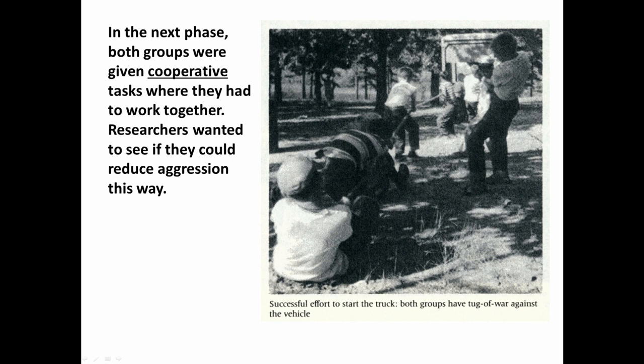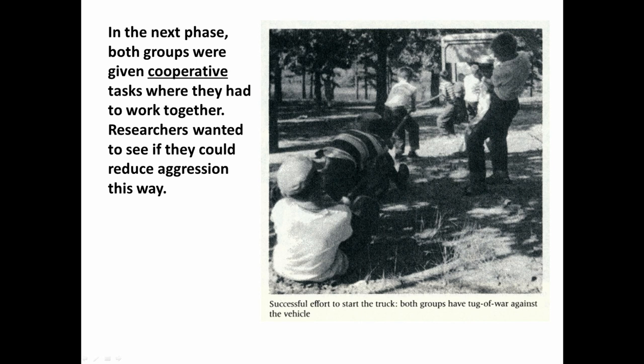After Sharif was successful in getting hostility between the groups, he wanted to see if he could also reduce it. He staged a number of incidents where the two groups would have to work together to resolve the situation. For example, the lunch truck broke down and got stuck in a ditch, and the kids had to work together using the same rope previously used for the tug-of-war to pull the truck out. In another staged episode, the water line to the large water tank was clogged, and the campers had to work together to locate the source of the clog and fix it. There were a number of different episodes like this where the kids had to cooperate.